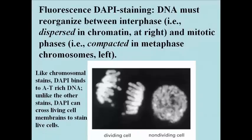The other kind of staining is a fluorescent stain called DAPI — D-A-P-I — and it also recognizes AT-rich DNA, like the Giemsa stain seen in G-banding. When applied to living, dividing and non-dividing cells, as shown here, it is clear from the localization and concentration of fluorescence that chromatin must be undergoing major changes in the transition between interphase and, in this case, anaphase of mitosis.